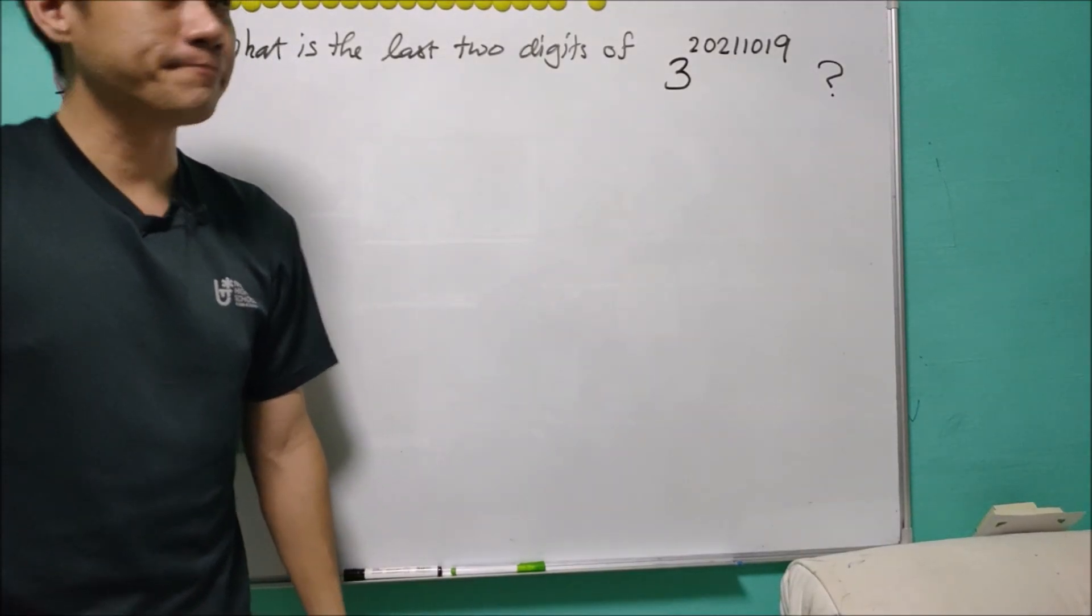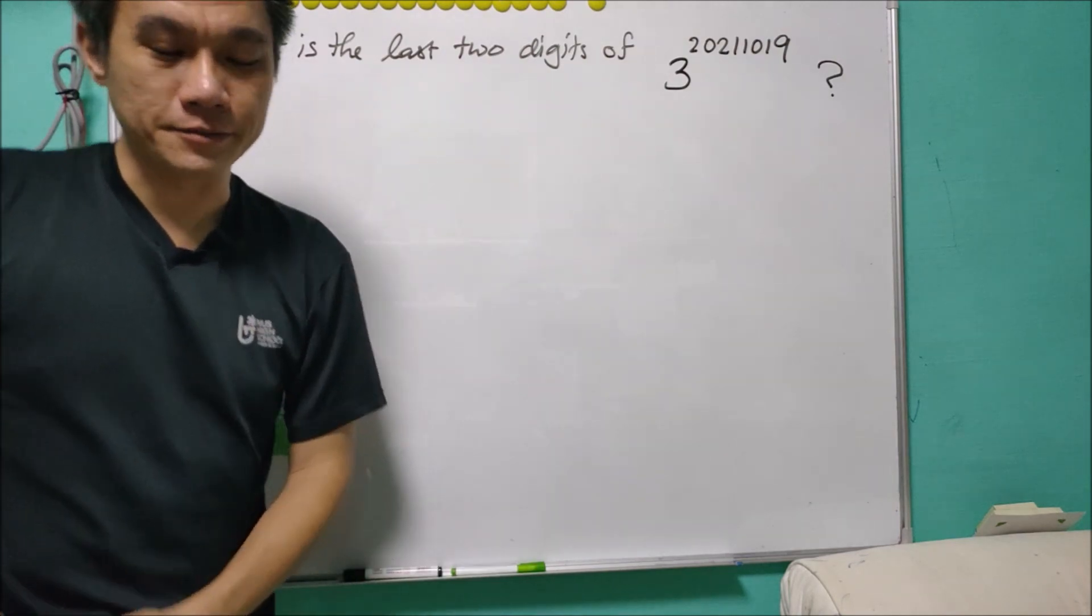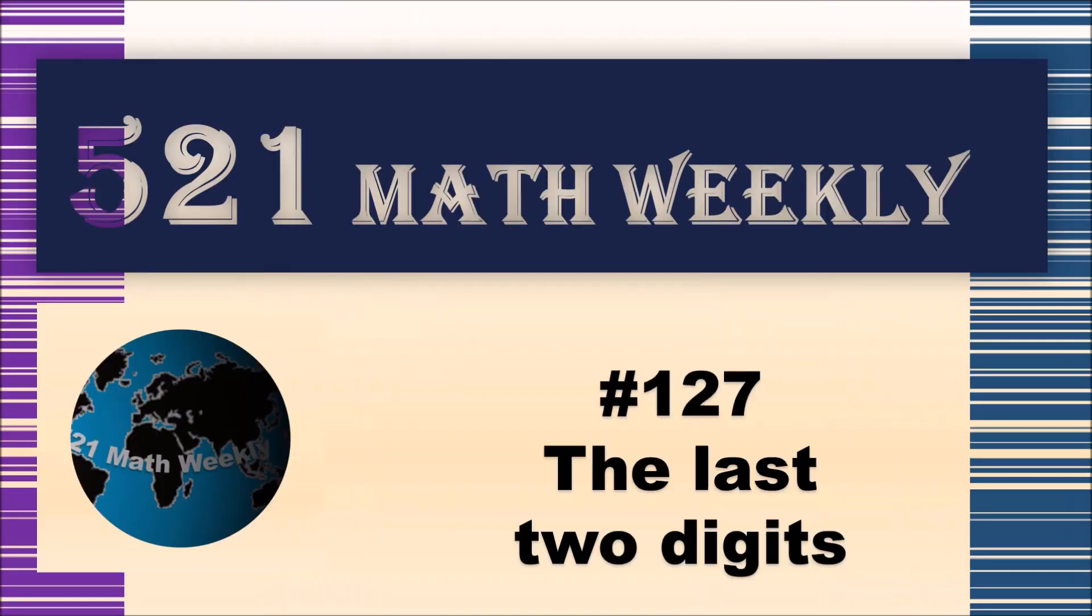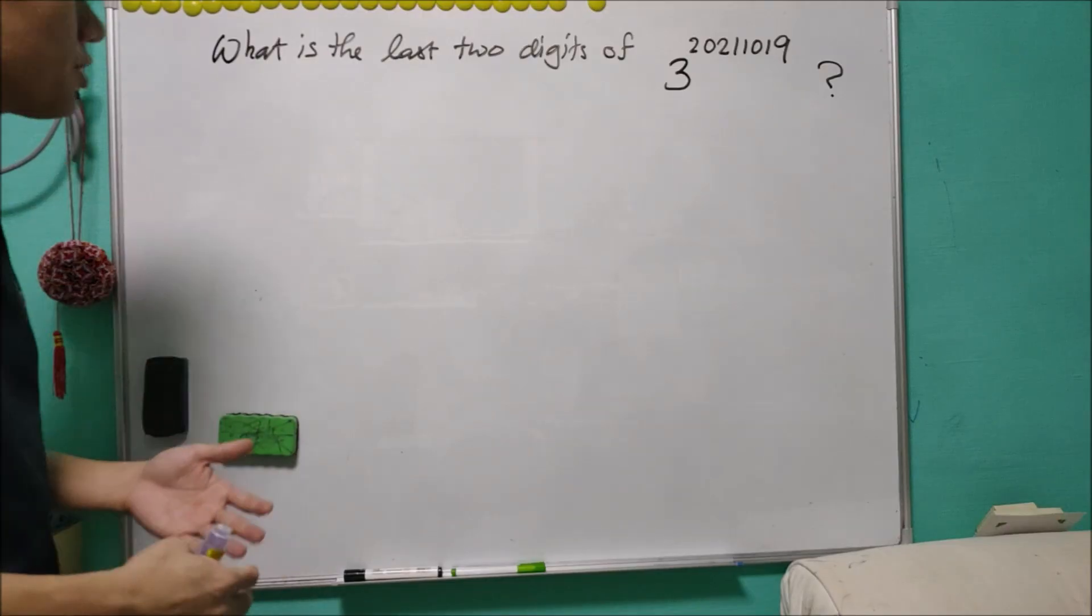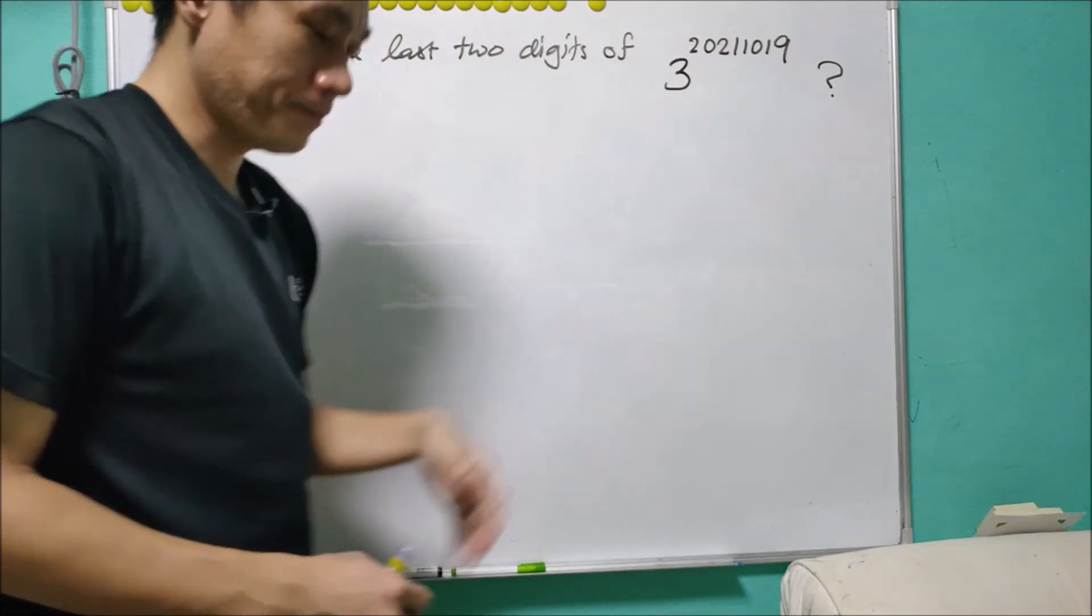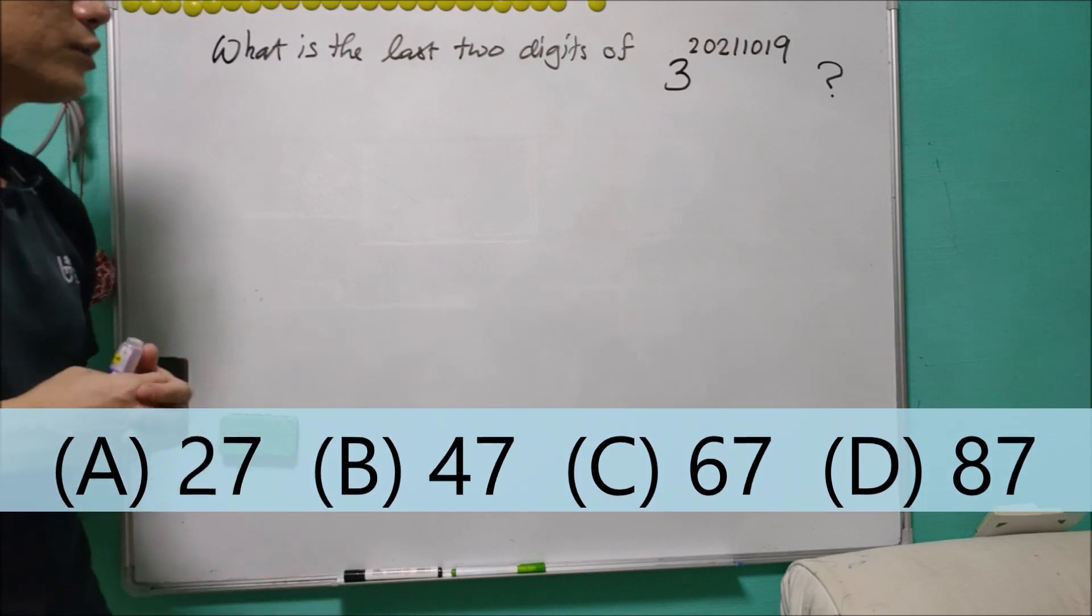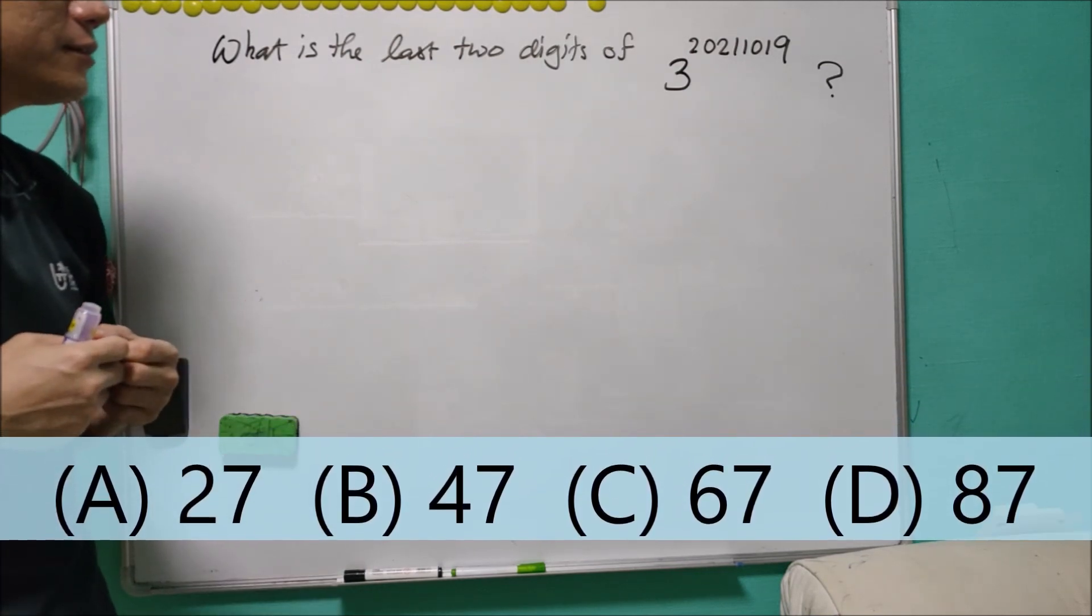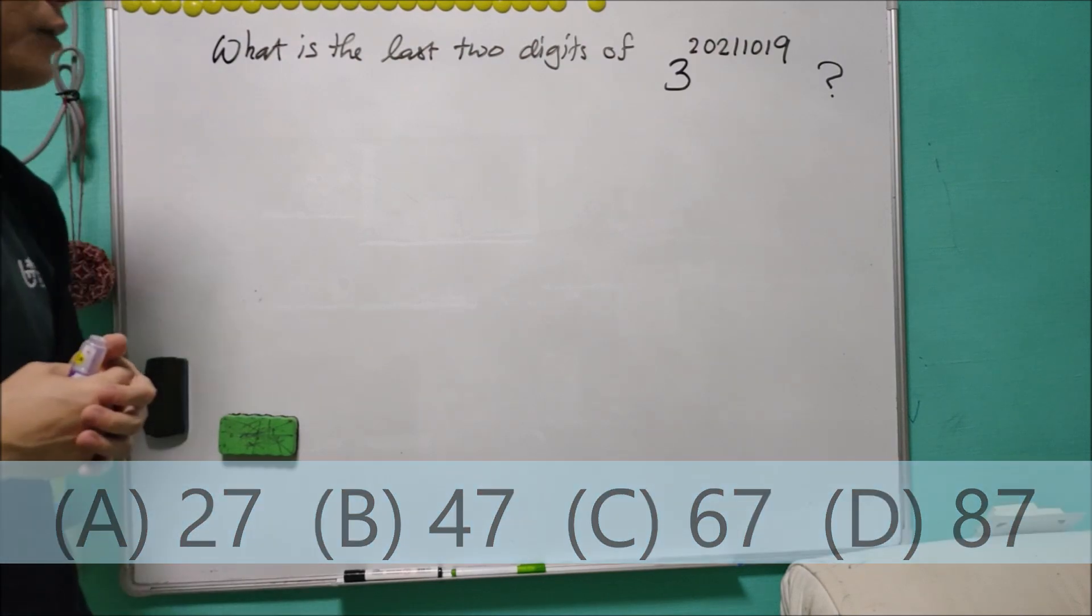Welcome to another math problem of the week. Last two digits of a big number. Let's talk about it. For today's question, we are asked to find the last two digits of this big number. This is a typical question in Math Olympiad. The options are A 27, B 47, C 67 and D 87. What do you think?